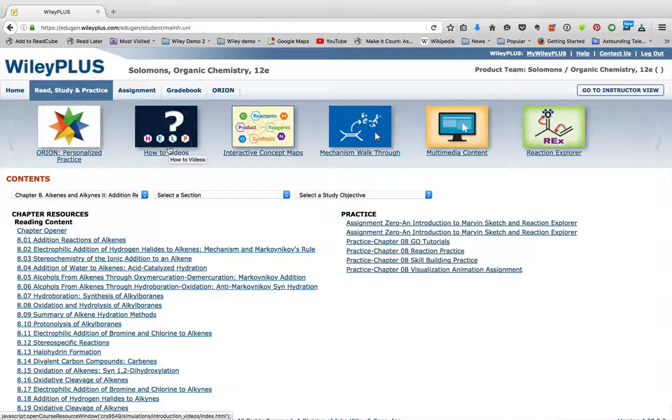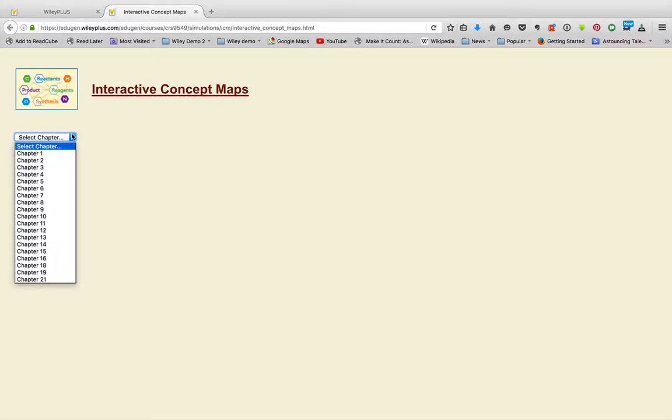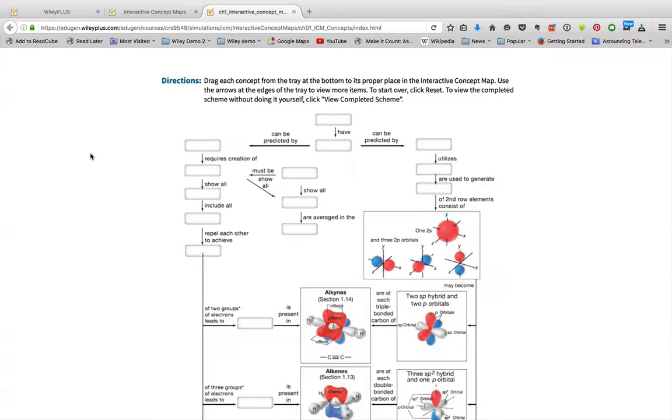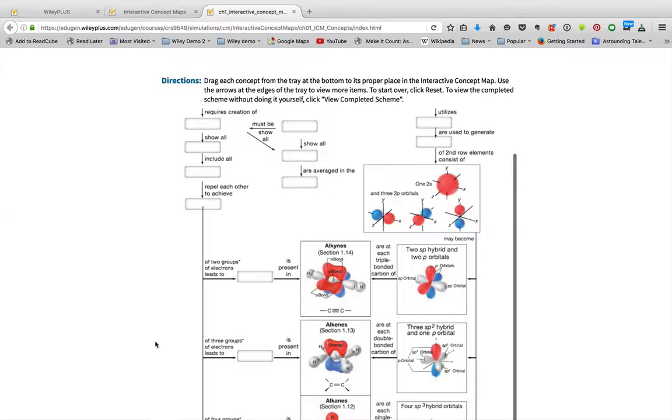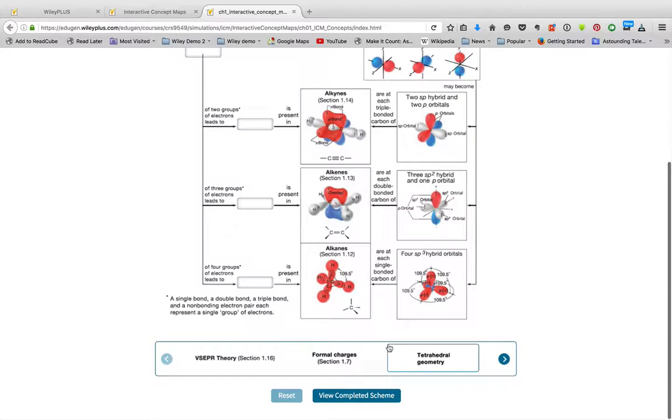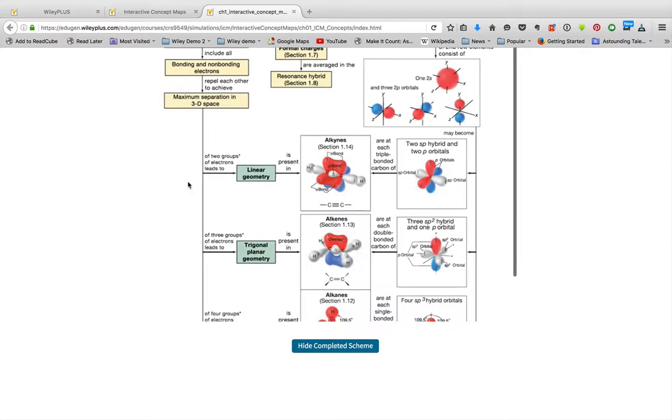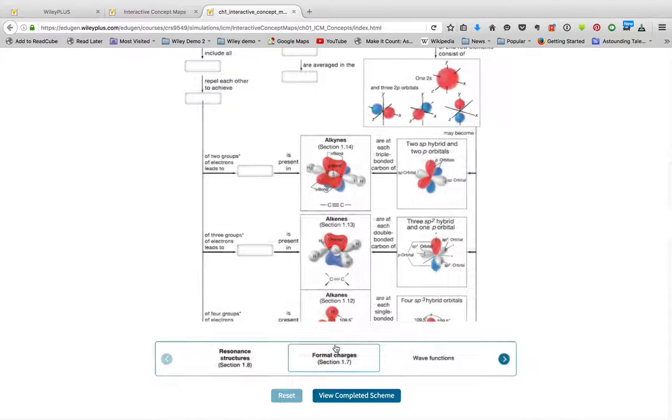You can also access them within a problem, which I'll show you in an assignment video later on. You can also access all the interactive concept maps. At the end of each chapter, or most chapters, there's these concept maps, which are basically taking all the concepts from the chapter and putting them into one map. This allows you to access those and use them as a study tool. They open up with all of the blanks there.